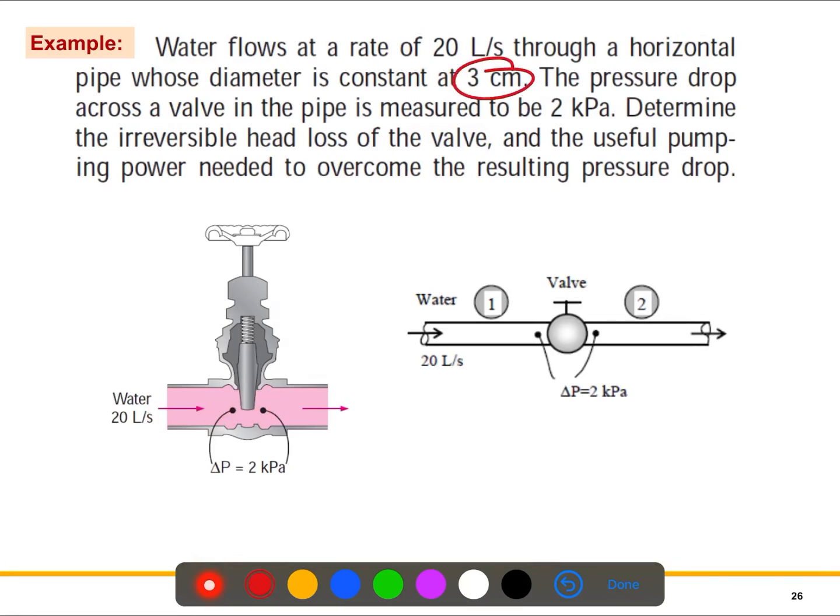This is 3 centimeters. The pressure drop across the valve in the pipe is measured to be 2 kPa, so that's the pressure difference delta P or the pressure drop. We need to determine the head loss hL and the pumping power needed to overcome this pressure drop.